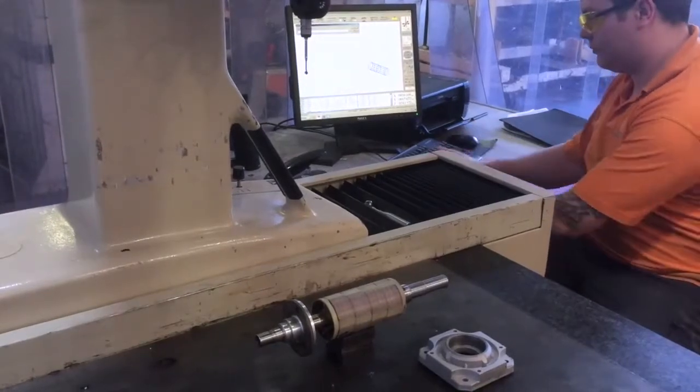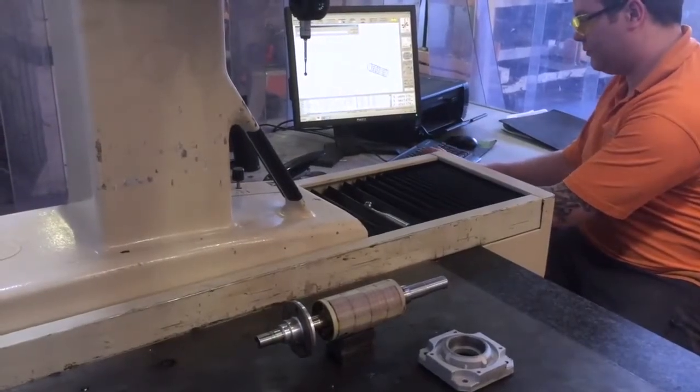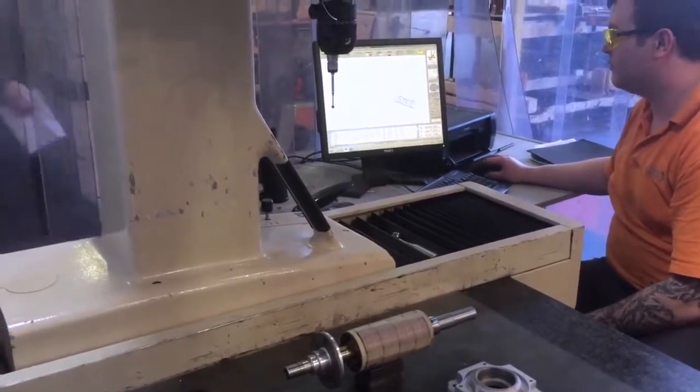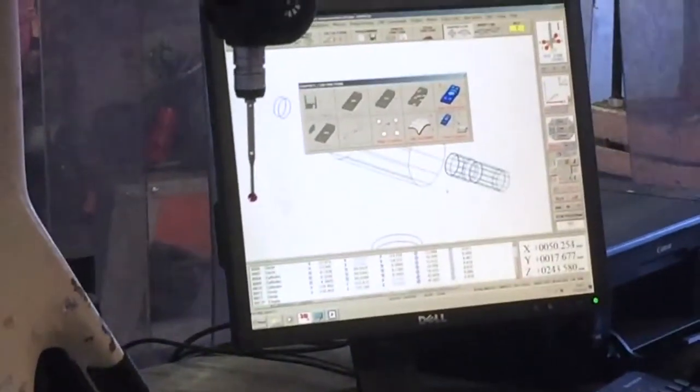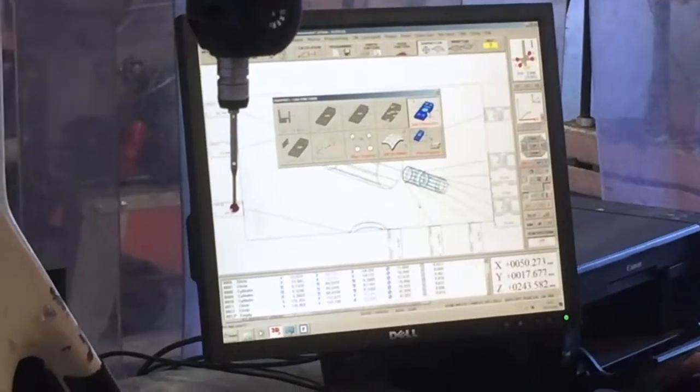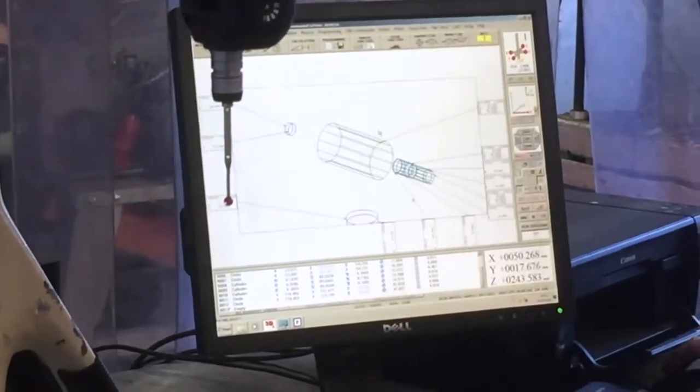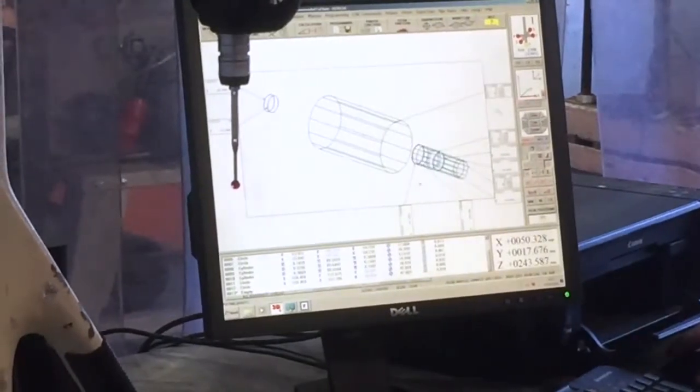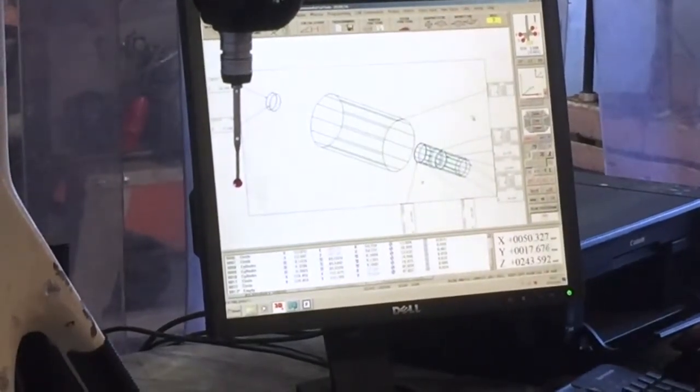The rotor will also be measured for the bearing journals and also for the straightness of the shaft using the coordinate measuring machine. You can see on the screen here where all the measurements have been taken and everything with this rotor is fine. It is straight, the run out is negligible or within tolerance, which will be 0.05mm for this motor.